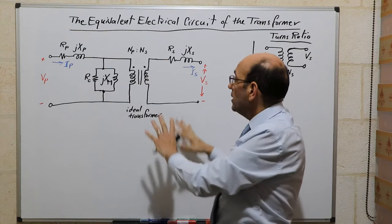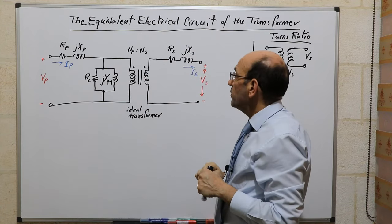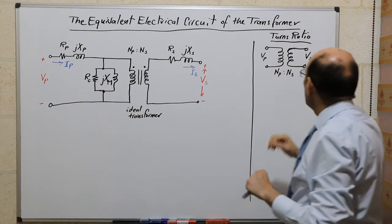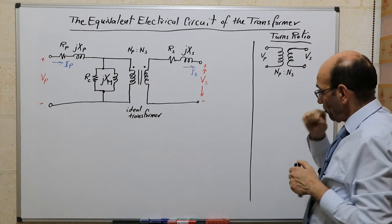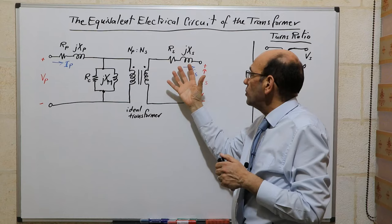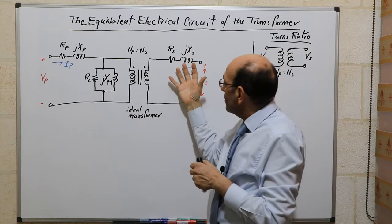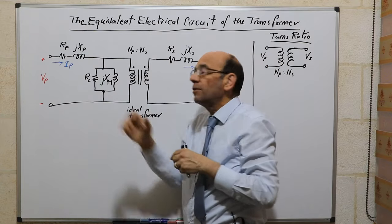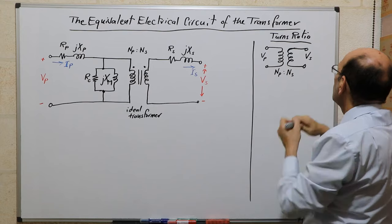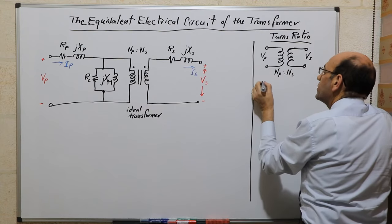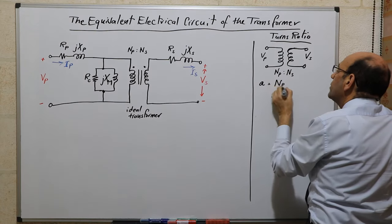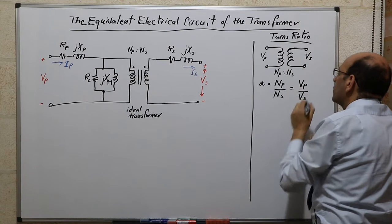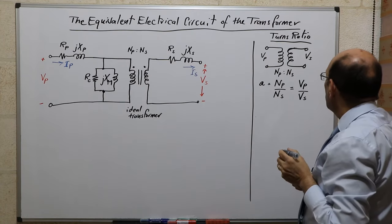What we'd like to do today is to start simplifying this model to make it much more practical to use in real life. To do this, we go to the turns ratio. We want to use this to be able to reflect the secondary into the primary. We want to see what does the secondary part look like when we see it from the primary. To do that, we resort to what is called the turns ratio. The turns ratio is the ratio between the turns of the primary to the turns of the secondary, which also is the voltage of the primary with respect to the voltage of the secondary.